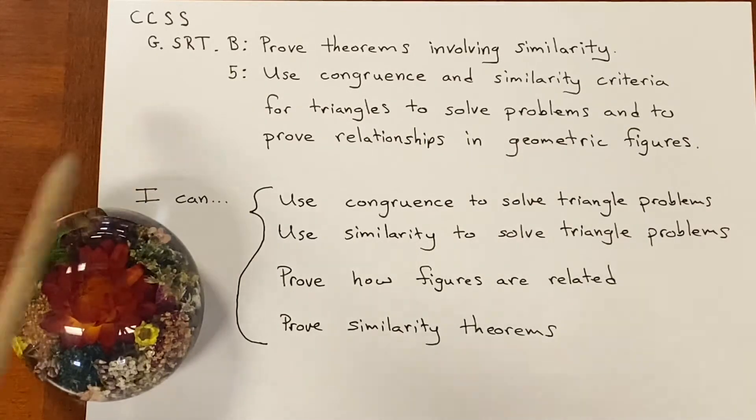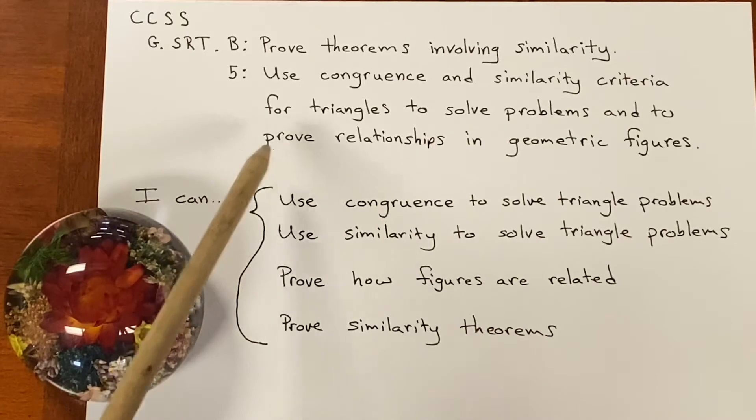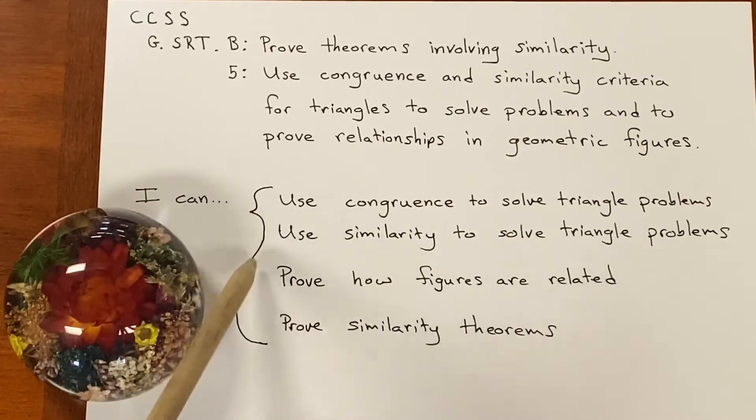Standard number five is to use congruence and similarity criteria for triangles to solve problems and to prove relationships in geometric figures. Here are the I can statements I pulled out.